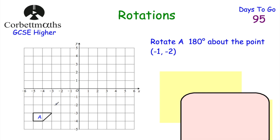This time we've got a grid with a trapezium A, and we've been asked to rotate A 180 degrees about the point negative 1, negative 2. Pause now and think about how you would go about doing that. So to rotate this trapezium 180 degrees about the point negative 1, negative 2, the first thing I would do is plot that point — that's the centre of rotation.